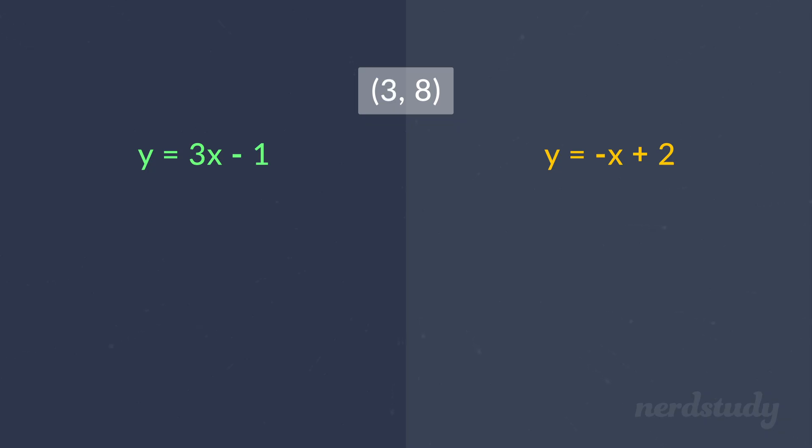So let's test this out and go ahead by plugging in 3 into this equation. What we get is 9 minus 1, which equals to 8. Awesome! So this point does exist on this line, but let's see if the same applies for the next line.